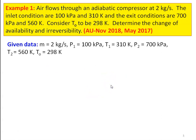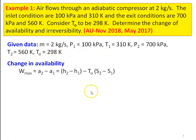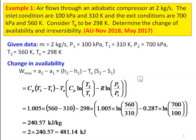After reading the problem, write down the given data: m = 2 kg/s, P1 = 100 kPa, T1 = 310 K, P2 = 700 kPa, T2 = 560 K, T0 = 298 K. The change in availability, W_max = A2 − A1 for the steady flow process, which equals H2 − H1 − T0(S2 − S1).